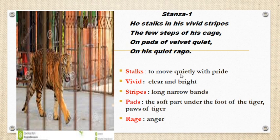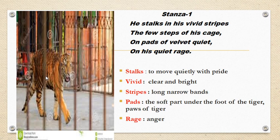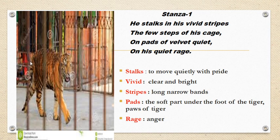He stalks — stalks means to move quietly with pride. Vivid means clear and bright. Stripes are the long narrow bands — the black and yellow stripes on the body of the tiger. Pads of velvet quiet — the soft part under the foot of the tiger, the paws. The paw of a cat is very soft like velvet, which is a kind of cloth. Rage means anger — he has a lot of anger, he is very aggressive and furious. His rage is quiet because he is in the cage. He has only the few steps of his cage to stalk — he cannot run.